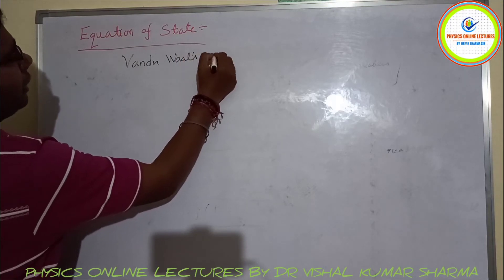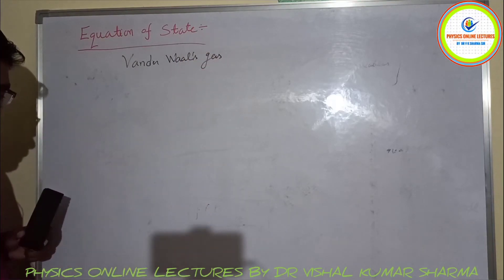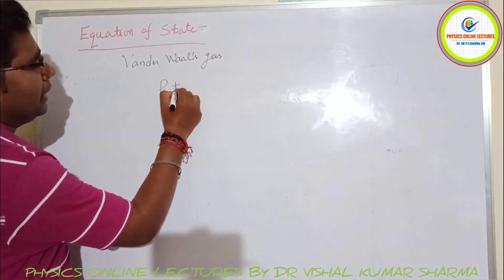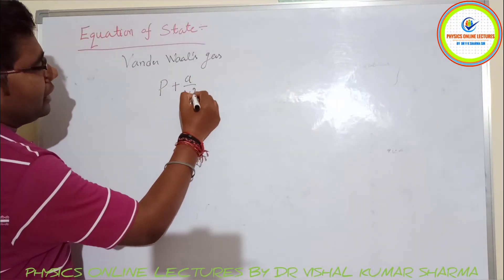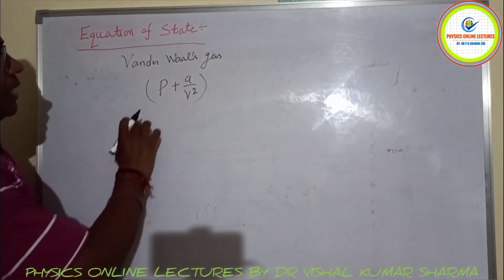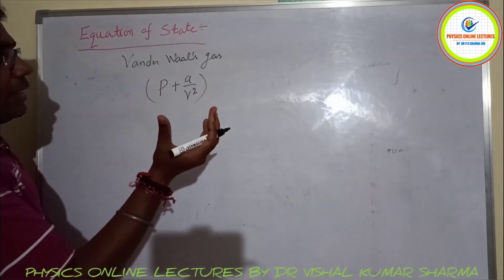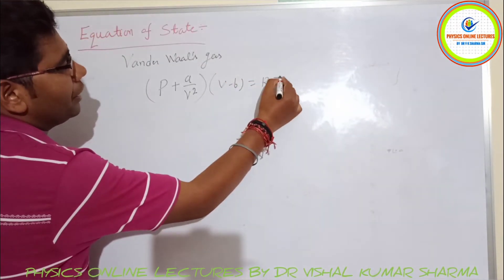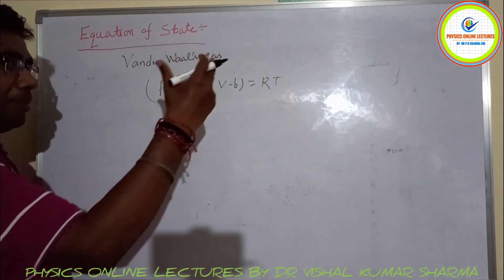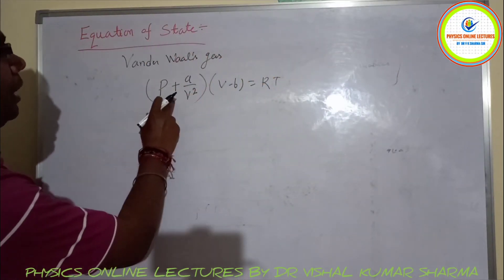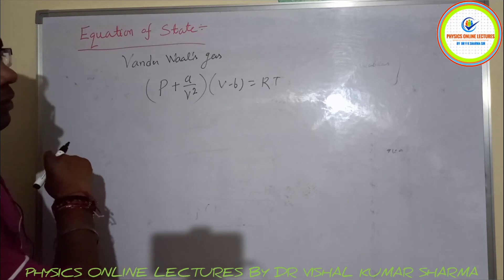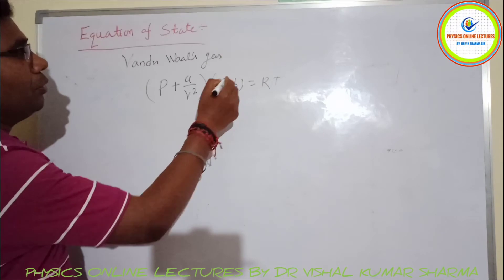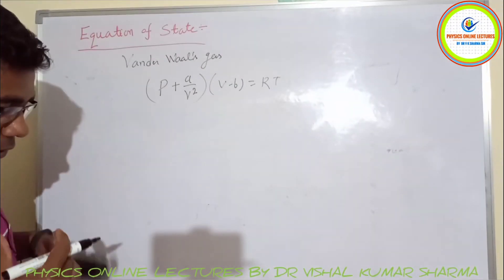For the van der Waals gas, the equation of state for a real gas includes corrections: (P + a/V²)(V − b) = RT, where a and b are the van der Waals constants.